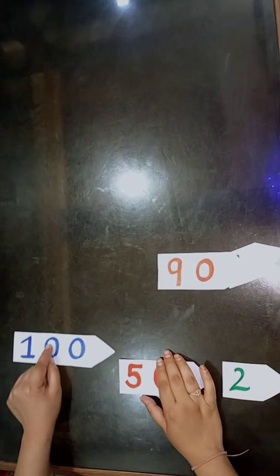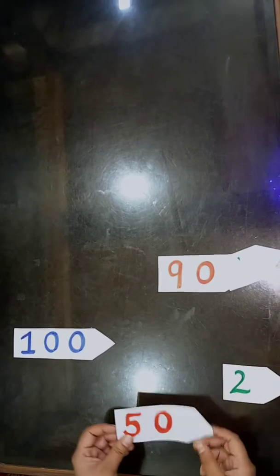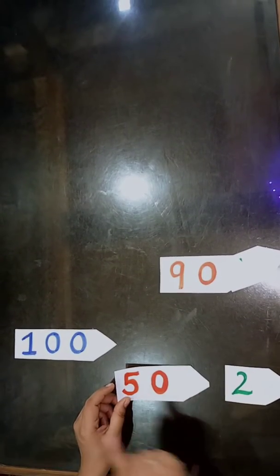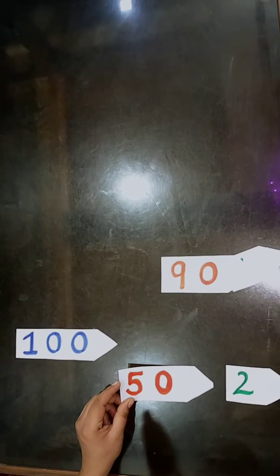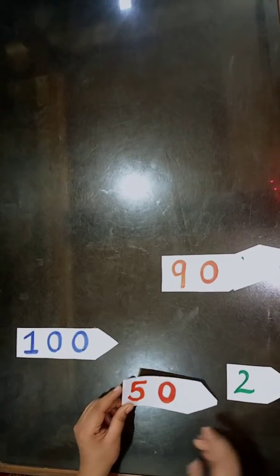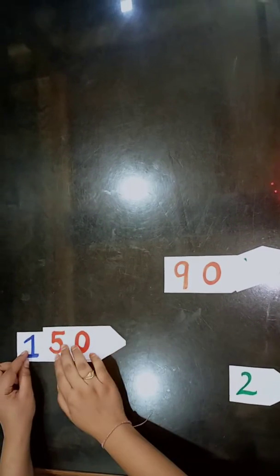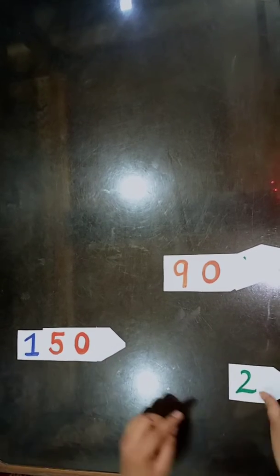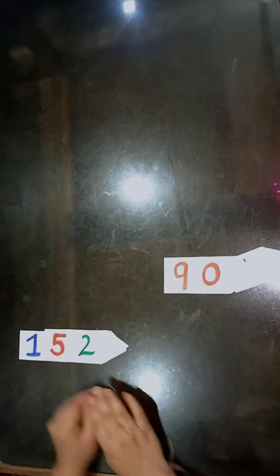So here we can say that 100. Now we can place them 152 according to their position 1's 10's or 100. So now 5 is in 10's place, 2 is in 1's place.